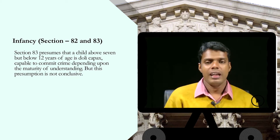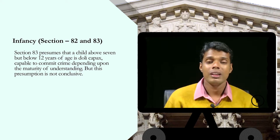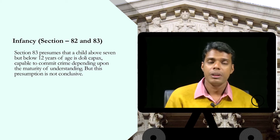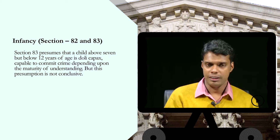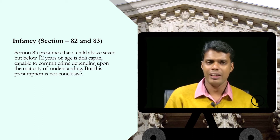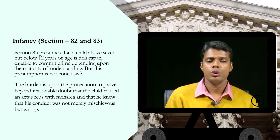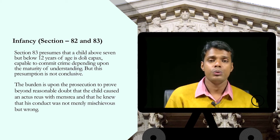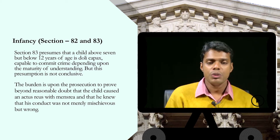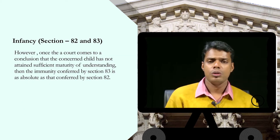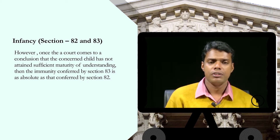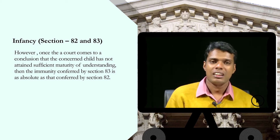Section 83 presumes that a child above 7 but below 12 years of age is doli capax, meaning he is capable of committing a crime depending upon maturity of understanding. But this presumption is not conclusive, unlike Section 82. With respect to Sections 82 and 83, the burden is upon the prosecution to prove beyond reasonable doubt that the child caused the act with mens rea and knew that his conduct was not merely mischievous but wrong. Once the court concludes that the child has not attained sufficient maturity of understanding, the immunity under Section 83 is as absolute as that conferred by Section 82.